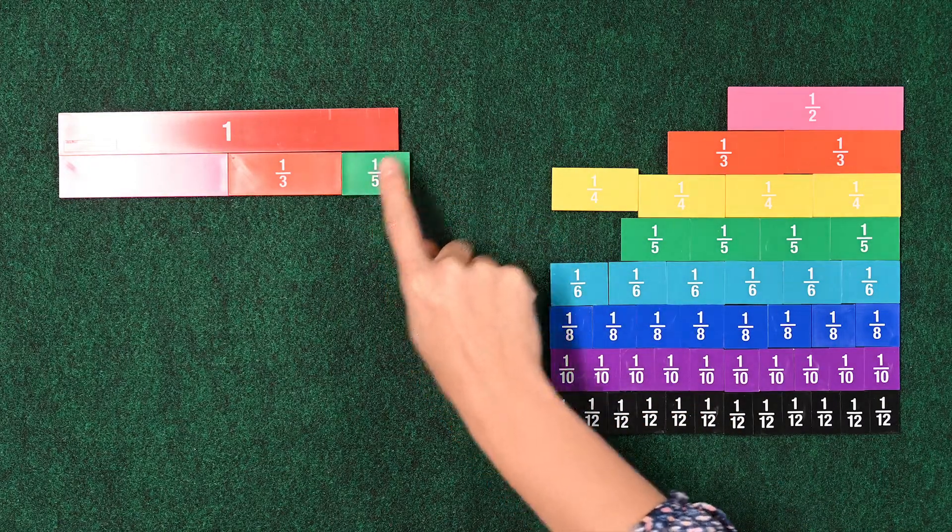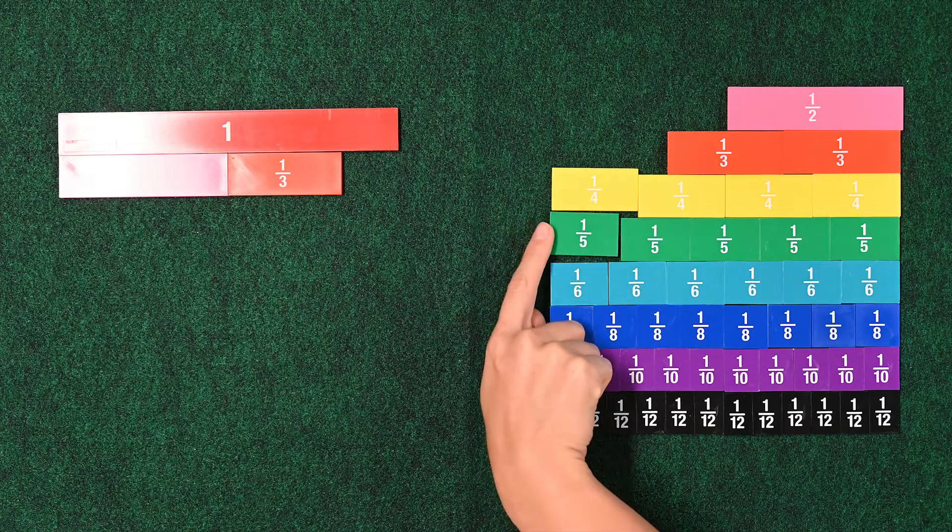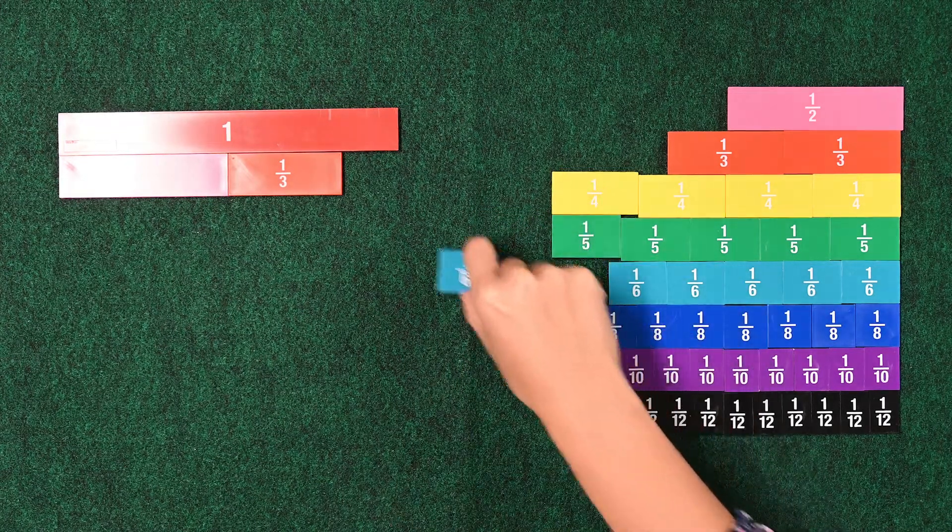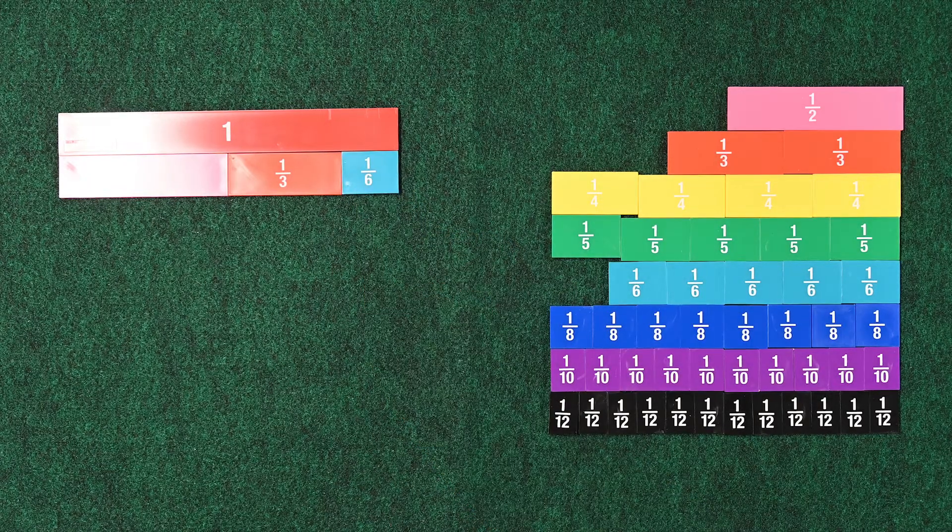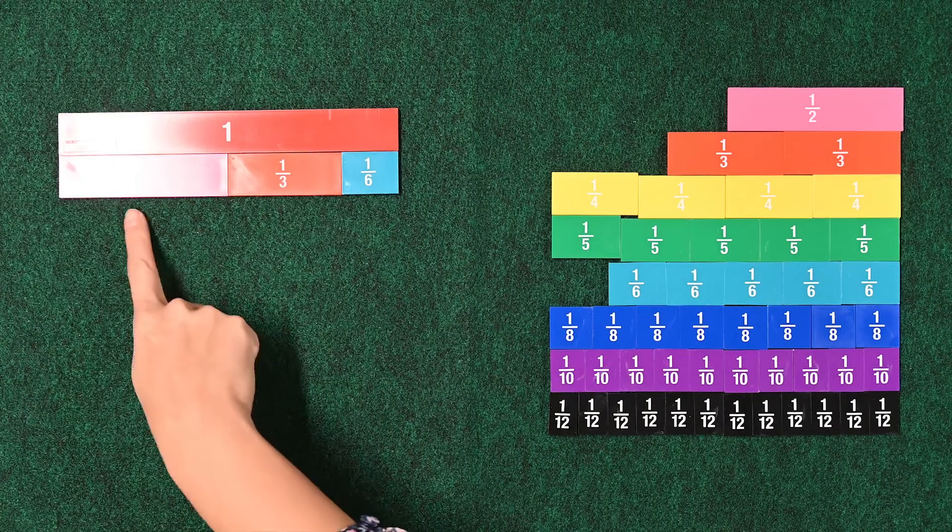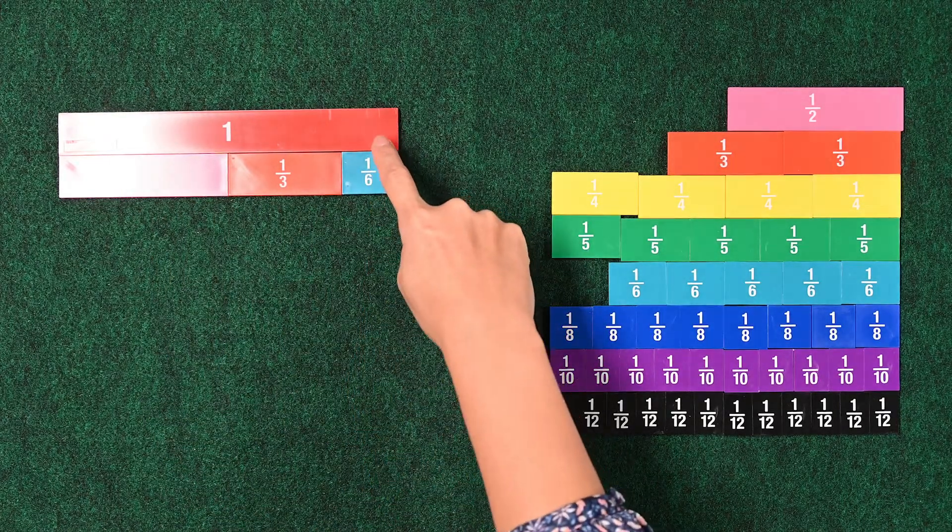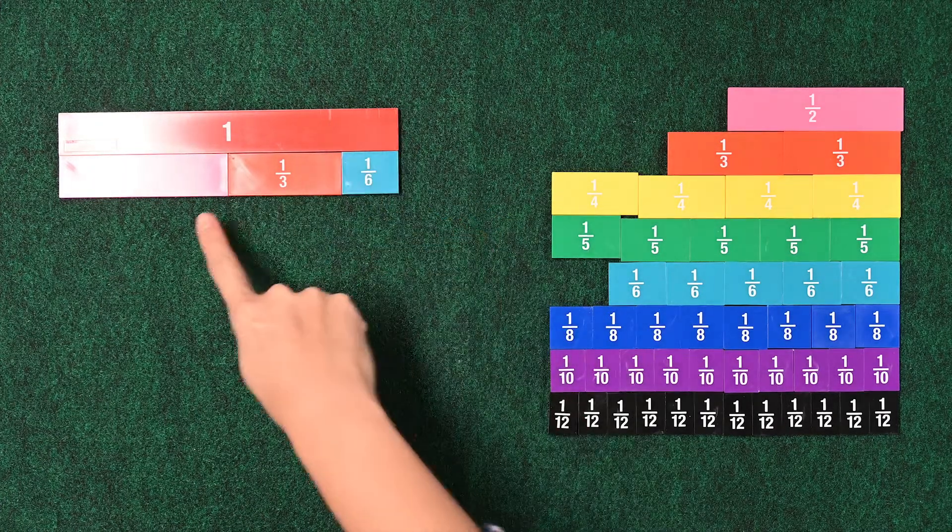Let's try a 1 fifth. Oh, still too big. So now let's try a 1 sixth. 1 sixth plus 1 third plus 1 half is the same as 1. Or 1 half plus 1 third plus 1 sixth equals 1.